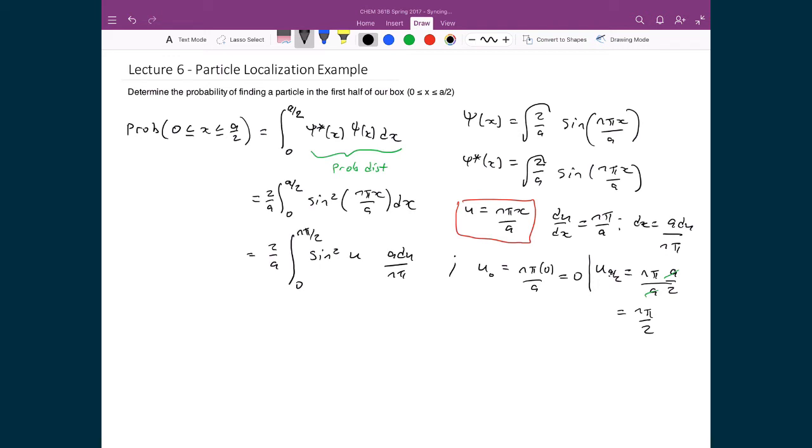When I evaluate this integral and apply my fundamental theorem of calculus, I'm not going to substitute back in for x. I can leave this in terms of u. Let's evaluate this integral. I have all my constants out front, 2 over n pi, because I can cancel out my a's.